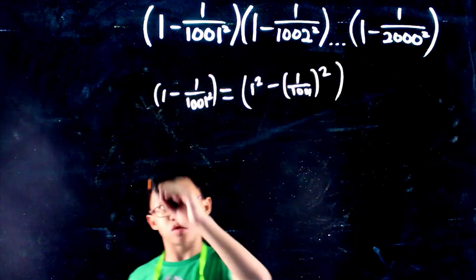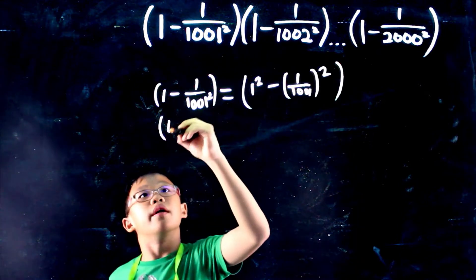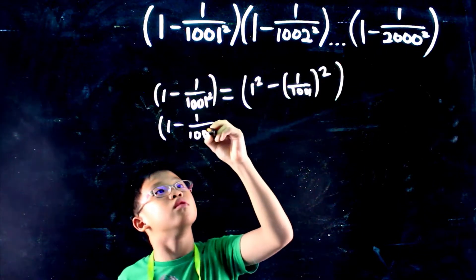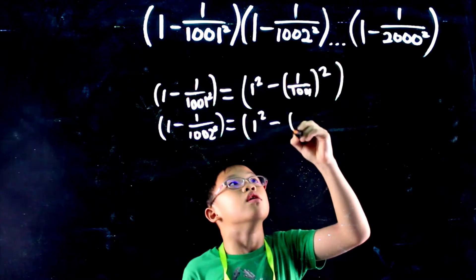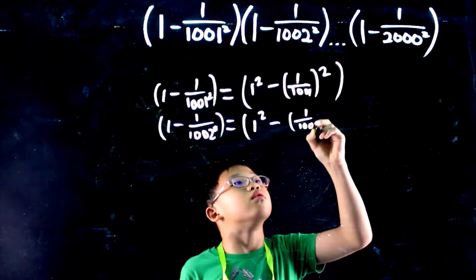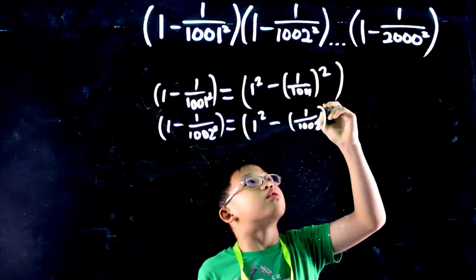And then we continue from the rest. 1 minus 1 over 1002 squared equals 1 squared minus 1 over 1002 squared.